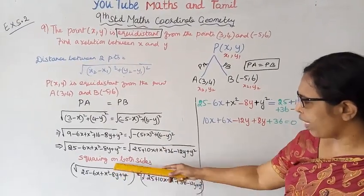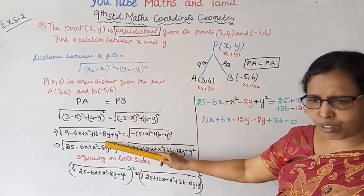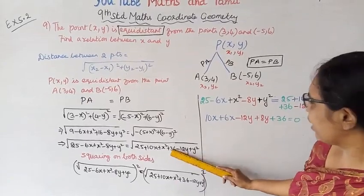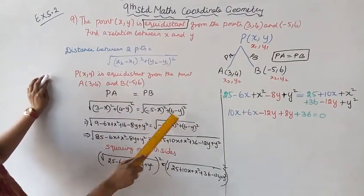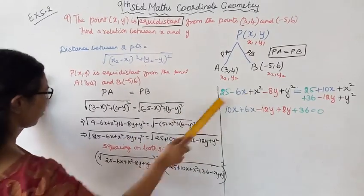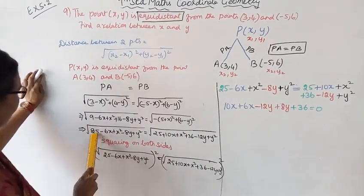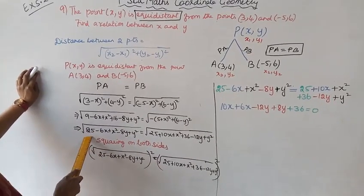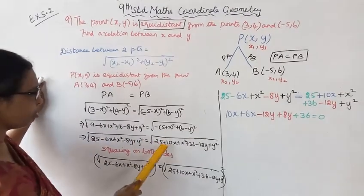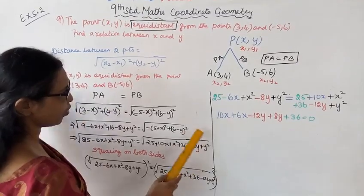Squaring on both sides to remove the square root: 9 - 6x + x² + 16 - 8y + y² = 25 + 10x + x² + 36 - 12y + y².